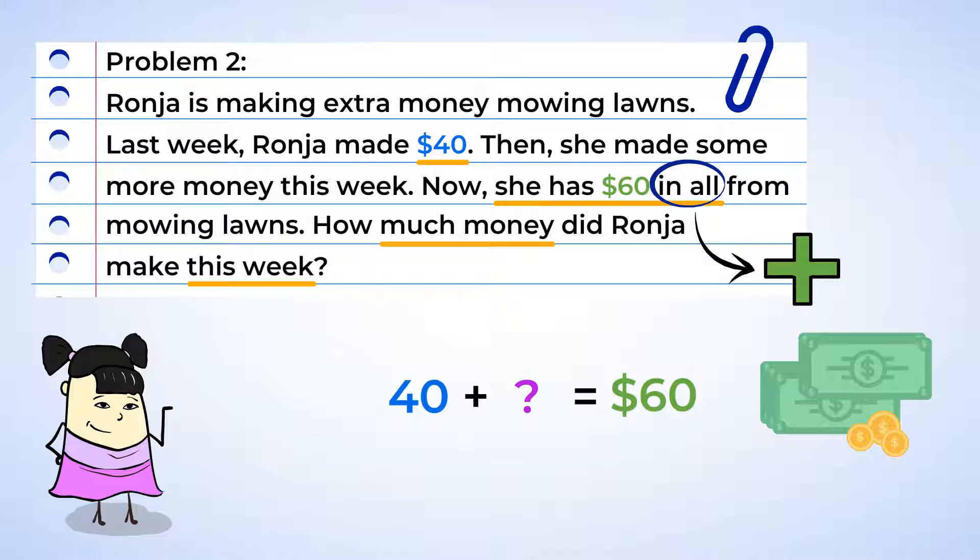This means that 40 plus some number equals 60. You can see that we are adding, but we only know one of the two numbers that are being added. We need to find the other number. By counting up, we find that 40 plus 20 is 60. This means that Ronja made $20 this week. Great work. By creating an addition equation, you figured out that Ronja made $20 this week.